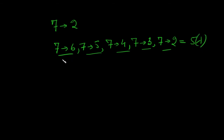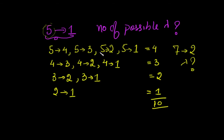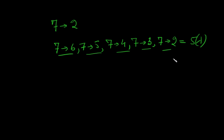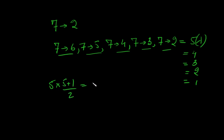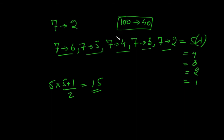For 7 to 2: 7→6, 7→5, 7→4, 7→3, 7→2 — that's 5 wavelengths from level 7, plus transitions from lower levels down to 2. There's a formula involving n(n-1)/2 for such problems. As a practice problem, try: how many wavelengths are possible when an electron goes from 100 to 40? In the next lecture we'll discuss the drawbacks of Bohr's model and further build on atomic structure. Until then, goodbye.